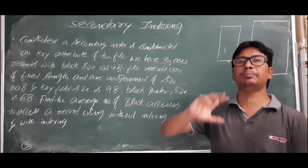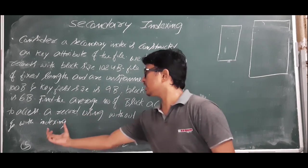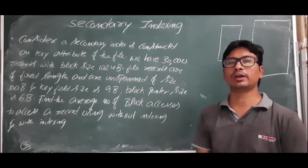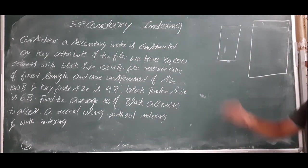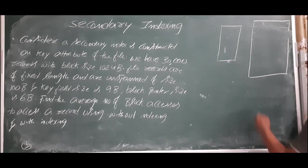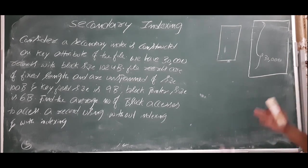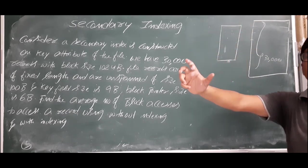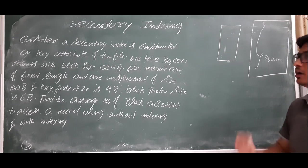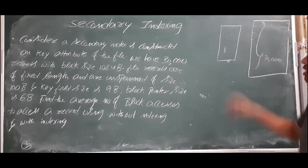They are asking: find the average number of block accesses to access a record with secondary indexing. The records are unsorted because we are creating a secondary indexing — meaning a primary indexing already exists on a primary key attribute, and now we are creating another indexing, a secondary indexing, on another attribute.